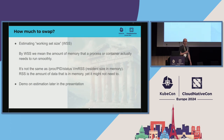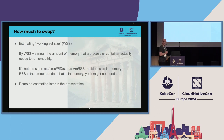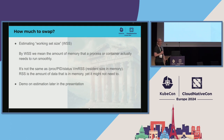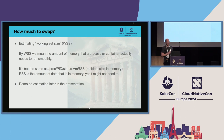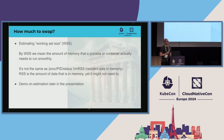How much to swap boils down to estimating the working set size of processes. Working set size means the amount of memory a process needs actively so that it runs smoothly — it's different from the resident set size found in process status, which is the amount of memory the process currently uses. Resident size is often bigger than what the process actually needs. I will demonstrate in this presentation how you can detect working set size of your processes and containers.